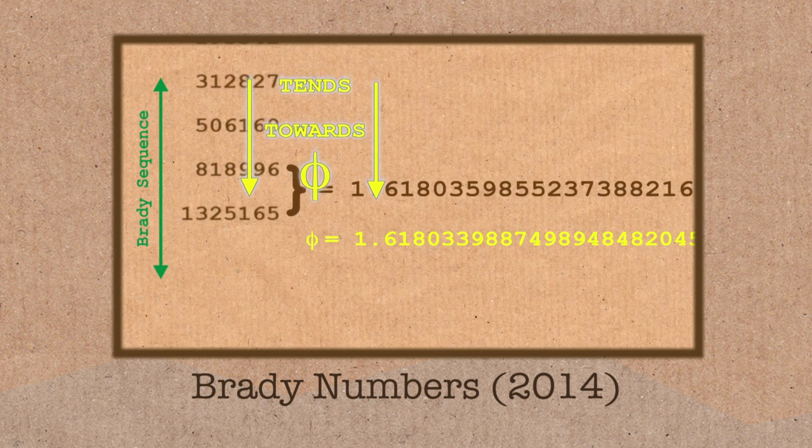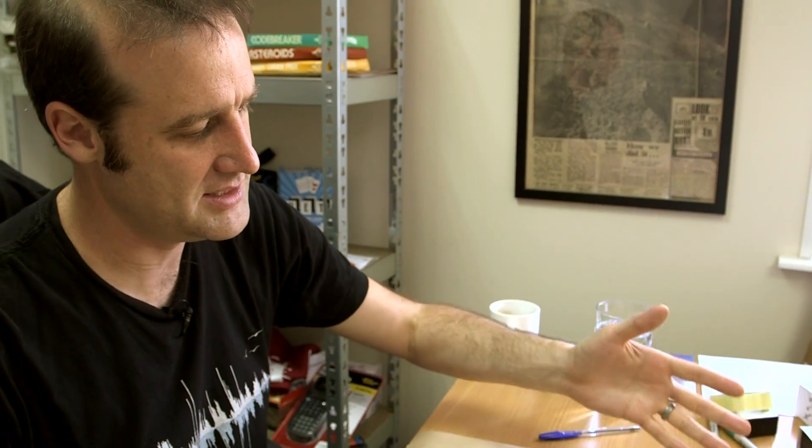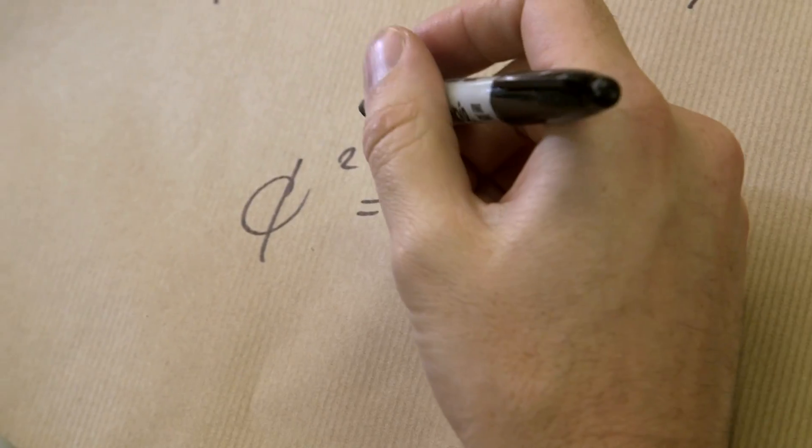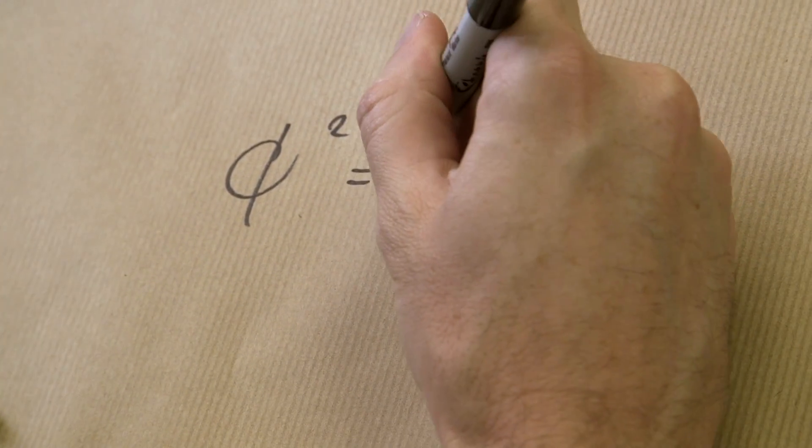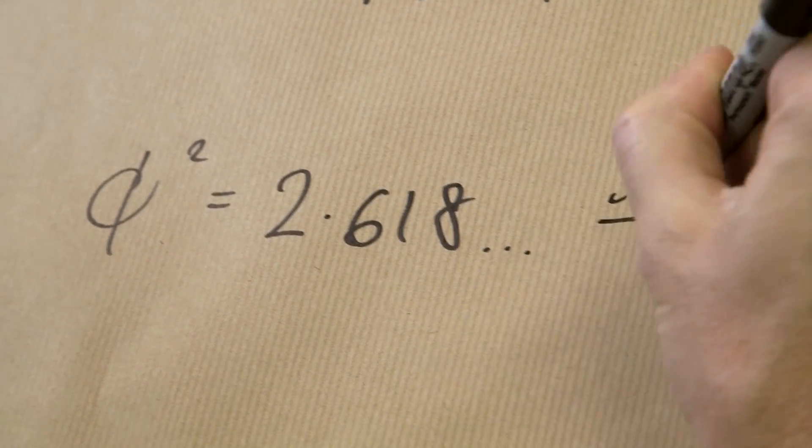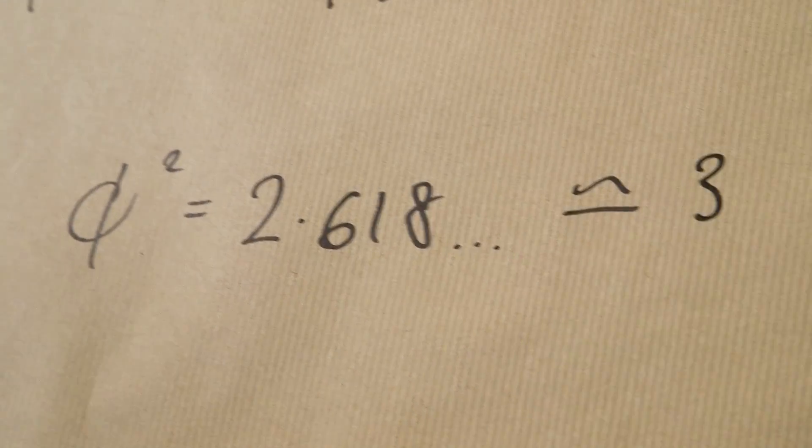And the crux of my argument as to why Lucas is better than Fibonacci, is if all these Fibonacci-esque sequences have that property, what happens if we start with the Golden Ratio as the ratio and then work out what sequence drops out? And so, what I did was show that if you take the Golden Ratio and square it, you get 2.618 dot dot dot, which, if you round it to the nearest whole number, is 3.